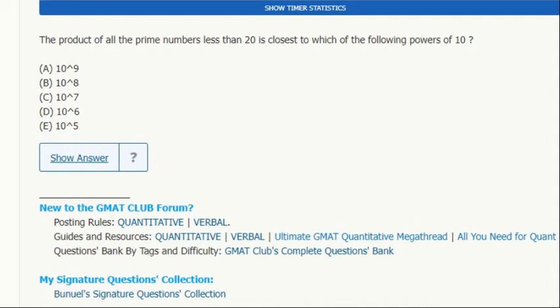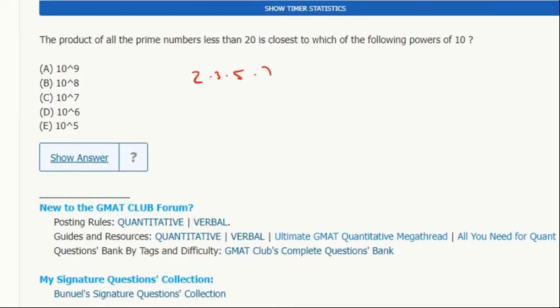So the product of all the prime numbers less than 20 is closest to which of the following powers of 10? So let's see, that's 2, 3, 5, 7, 11, 13, 17, and 19.